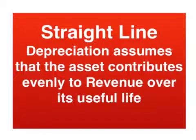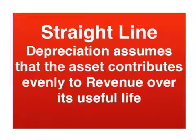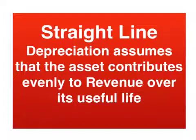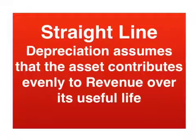A key point here is that there are a variety of depreciation methods. In Unit 3, we only need to know the straight-line method. In Unit 4, we will introduce the reducing balance method. The straight-line method assumes that an asset will contribute evenly to revenue over its life, so we allocate the cost of the asset over its useful life in a consistent and even manner.